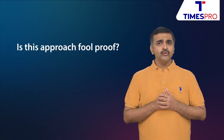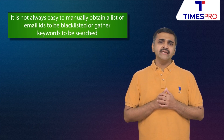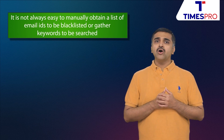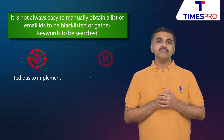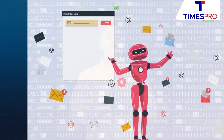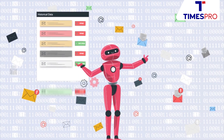Is this approach foolproof? It is not always easy to manually obtain a list of email IDs to be blacklisted or gather keywords to be searched, because this approach is tedious to implement and is prone to errors. Alternatively, instead of a human-written computer program, we can have an algorithm which would automatically read the historical data and generate a series of rules. This is what machine learning does.